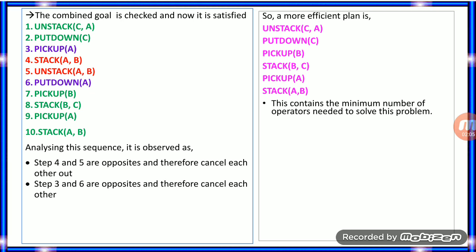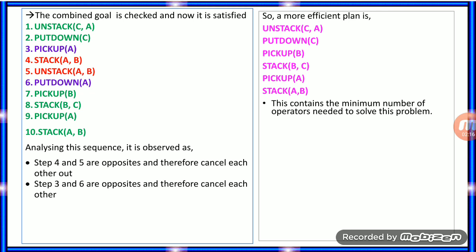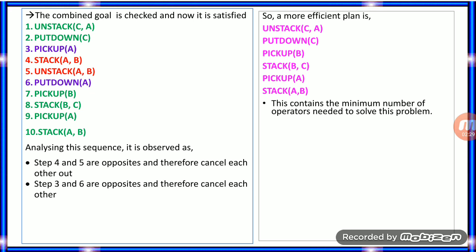Combining both procedures gives 10 steps from unstack(C, A) to stack(A, B). Analyzing the sequence, step 4 and step 5 are opposites and cancel each other; step 3 and step 6 are also opposites and cancel each other. After cancellation, the final plan is: unstack(C, A), put_down(C), pickup(B), stack(B, C), pickup(A), stack(A, B). This minimal sequence solves the harder problem — this is the Sussman Anomaly.